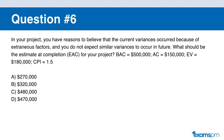Now let's do some math — question number six. In your project, you have reason to believe that the current variance occurred because of extraneous factors and you do not expect similar variances in the future. What should your Estimate at Completion (EAC) be, given that BAC = $500,000, AC = $150,000, EV = $180,000, and CPI = 1.5? A: $270,000. B: $320,000. C: $480,000. D: $470,000.